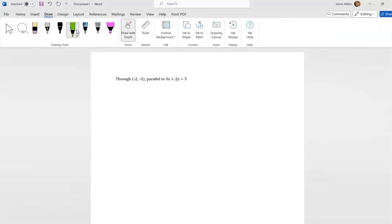So I've got 2y equals negative 3x plus 5, which gives me y equals negative 3 halves x plus 5 halves. That means this right here is my slope: negative 3 halves. And now, since this is parallel, it also means that this is the slope of my line. So now I have my slope and I have my point.